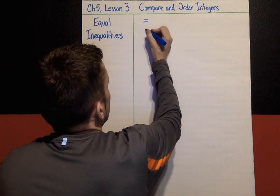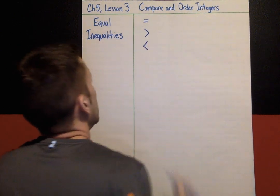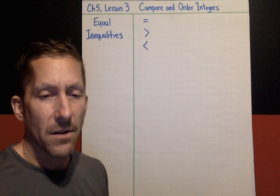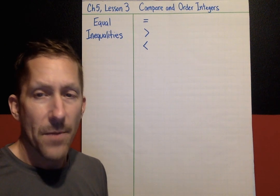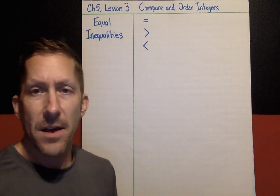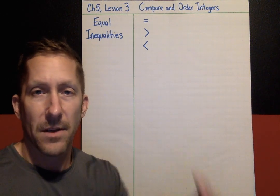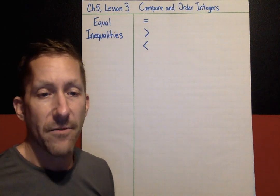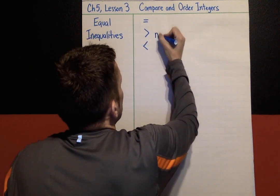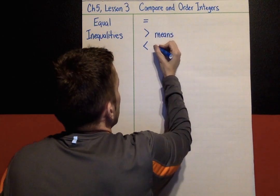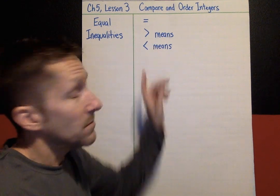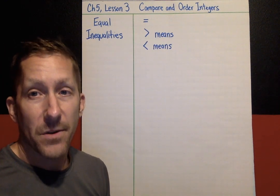Most sixth graders have experience comparing numbers and using inequalities. The way most kids learn this is that the inequality symbols are like a mouth — the mouth eats towards the greater amount. It either eats this way or that way, whichever amount is greater. But each symbol has a specific meaning, and I remember as a kid I could never remember which one was which.